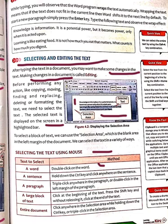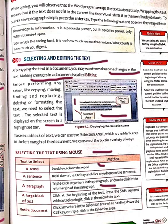To select a paragraph, triple-click anywhere in the paragraph — triple click करिये paragraph पे किसी भी जगे। There are two ways: the first one is triple-click anywhere in the paragraph and the whole paragraph will be selected. Otherwise, you can also double-click in the left margin of the paragraph to select it.